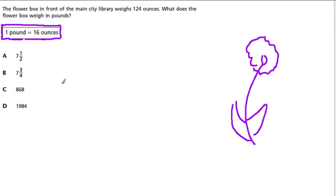They're giving us the relationship. They want us to use this relationship to solve the problem. So here the flower box in front of the main city library weighs 124 ounces.